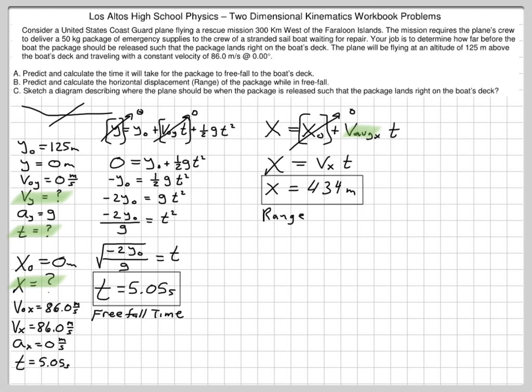Part C is asking us to sketch a diagram describing where the plane should be when the package is released, such that the package lands right on the boat's deck. So, this is what I'm thinking. If this is the airplane, and somewhere below is the water, if I put the boat right down here, right below the airplane, and you drop the package, will it land in the boat? Well, of course not. The package doesn't just fall straight down. It is moving to the right, so the package is going to do this, this, and this, and this.